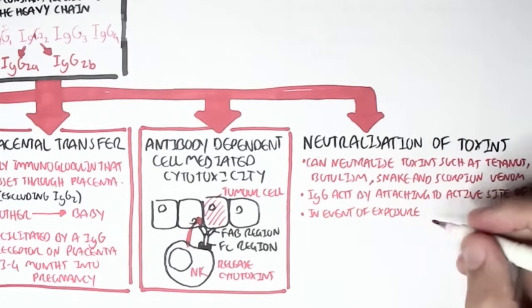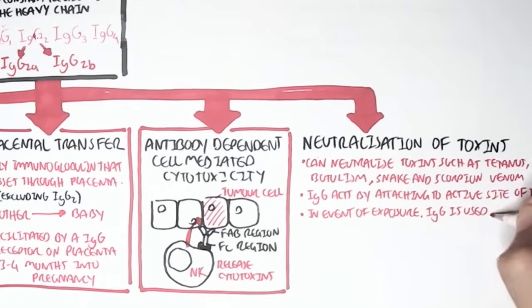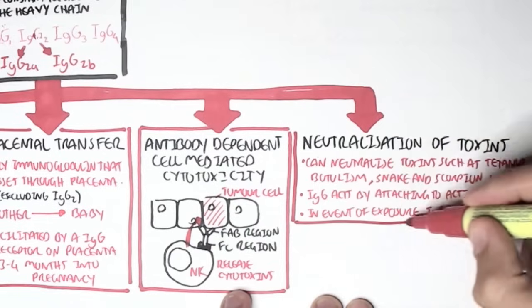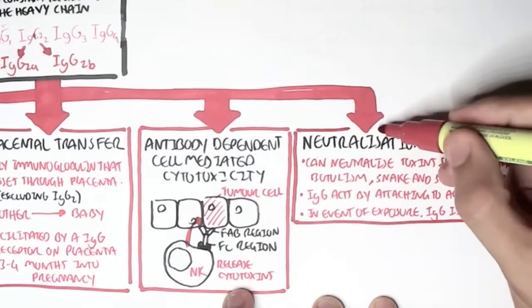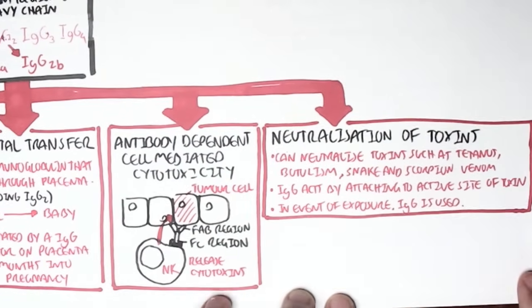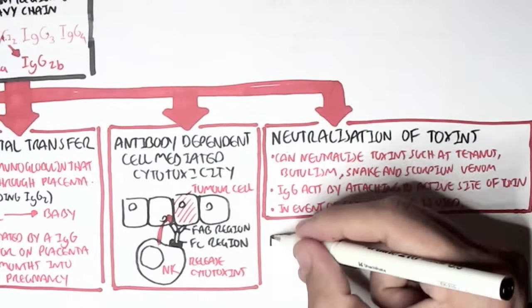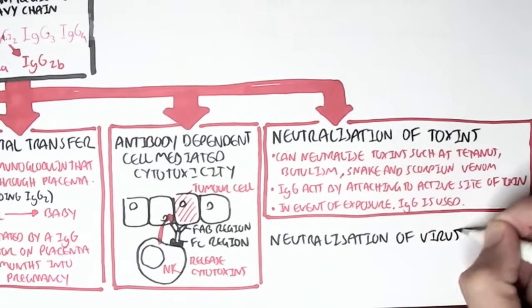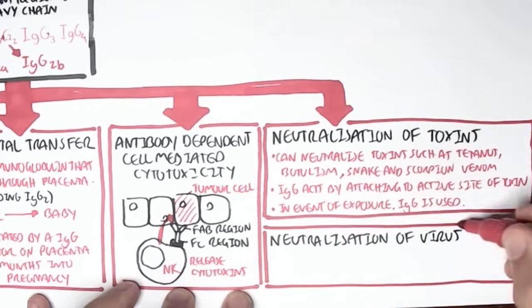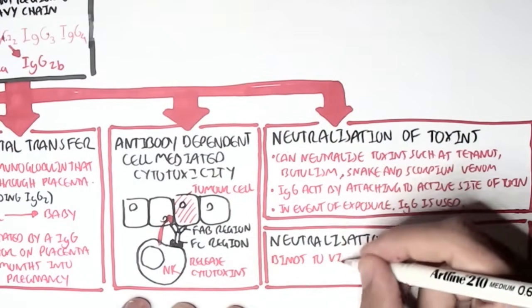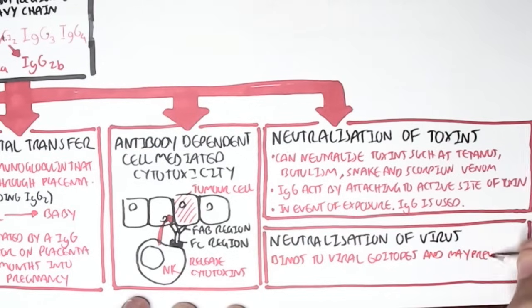And because of this, in an event of an exposure, IgG is usually administered to neutralize the venom, the toxin. And also, IgG works to neutralize viruses as well, and it binds to the viral epitopes, the antigens, and may prevent viral absorption and release.